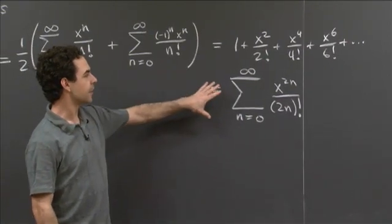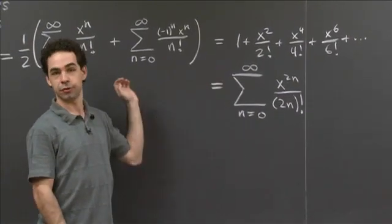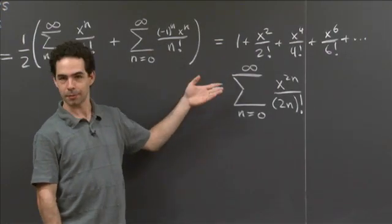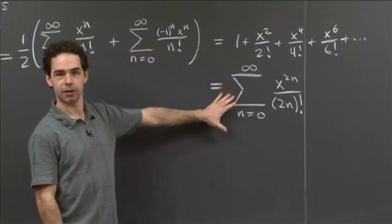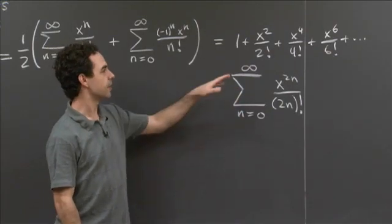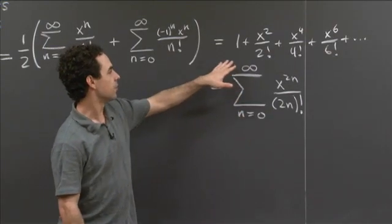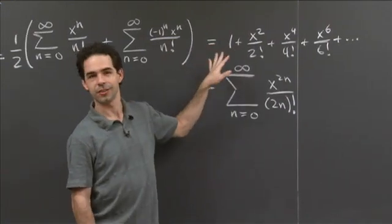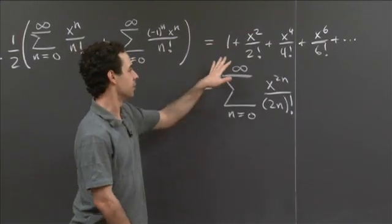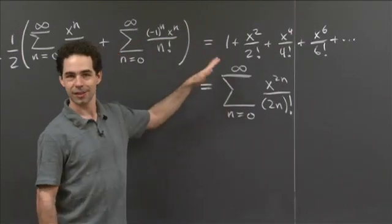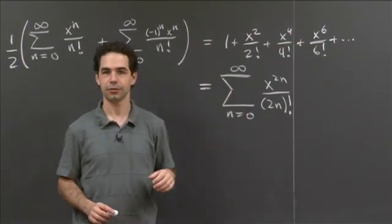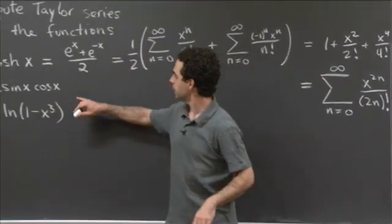If you wanted the hyperbolic sine function, you could do something very similar, or you could remember that hyperbolic sine is the derivative of hyperbolic cosine, and just take a derivative from this expression. One other thing to notice is that this looks very similar to the Taylor series for cosine of x — another one of those funny coincidences between regular trig functions and hyperbolic trig functions.